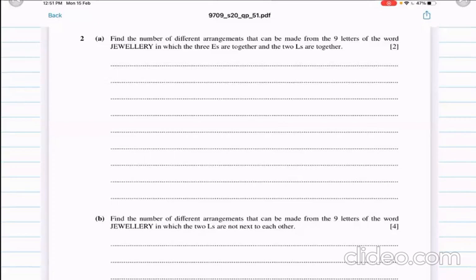in which the three E's are together and the two L's are together. Find the number of arrangements that can be made from the 9 letters of the word JEWELRY in which the two L's are not next to each other.